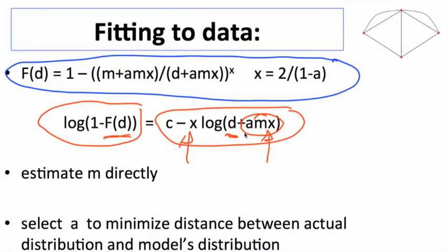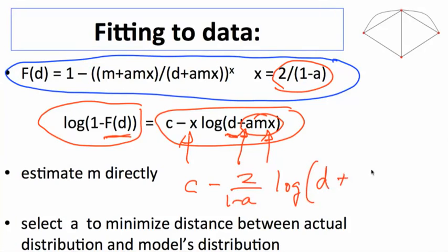A is the parameter we want to estimate. How much is uniformly at random? How much is being formed via preferential attachment? The a is entering here. It also enters this x term. So we've got c minus 2 over 1 minus a log of d plus am 2 over 1 minus a. We've got several places where a is entering, both here and here.